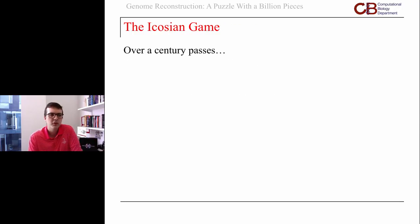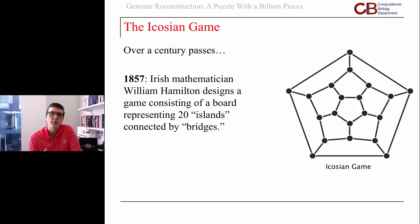A century goes by, and in 1857 Irish mathematician William Hamilton constructed a board game. It had 20 islands connected by bridges. There were holes in this wooden board connected with lines. The goal was to place 20 numbered pegs in the holes so that peg one was connected to peg two, connected to peg three, and so on until peg 20 connected back to peg one.